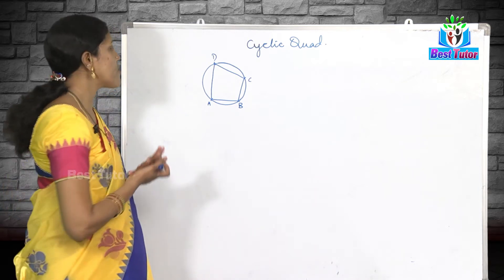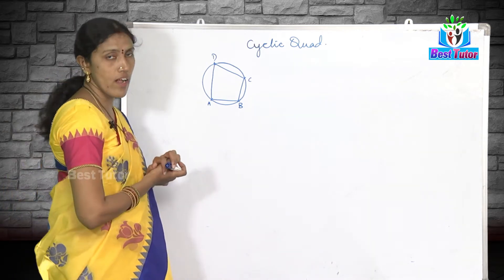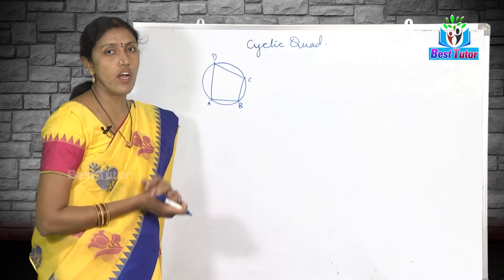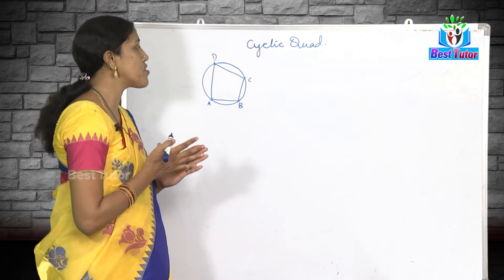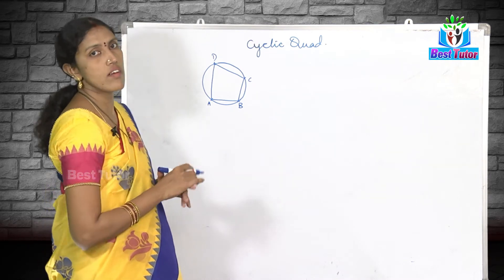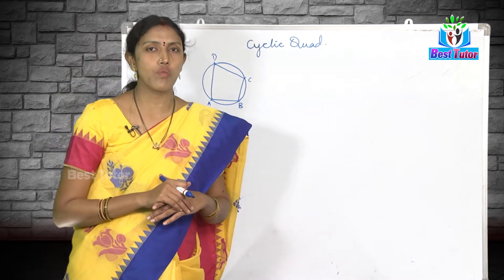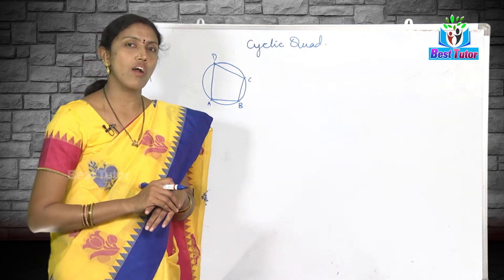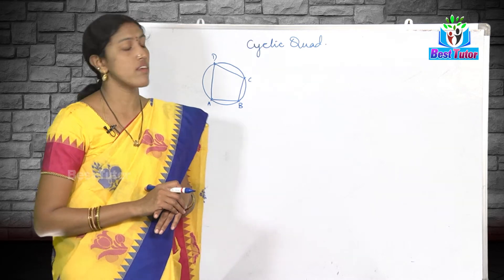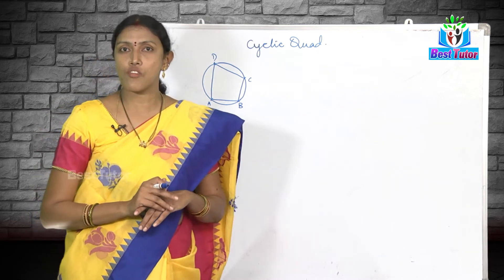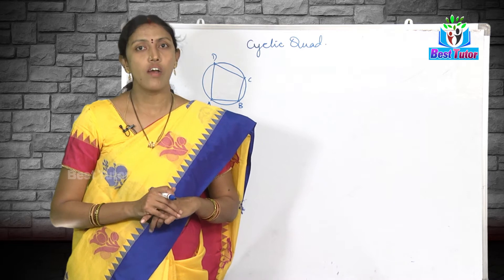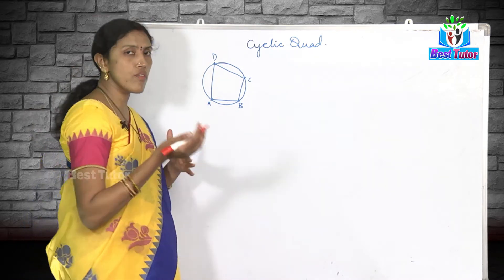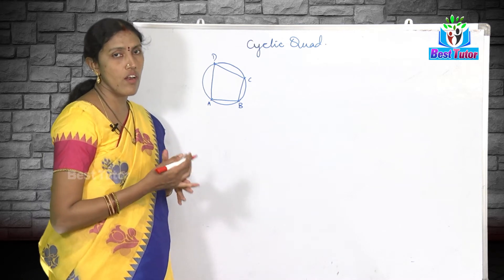What are its properties? The first property of a cyclic quadrilateral is that opposite angles are supplementary. Supplementary and complementary are two terms based on angles. Two angles are said to be supplementary if their sum is equal to 180 degrees. If the sum of two angles is equal to 90 degrees, they are said to be complementary angles. Now this theorem states that opposite angles of a cyclic quadrilateral are supplementary.